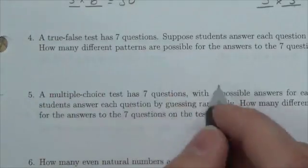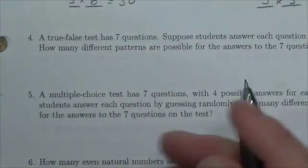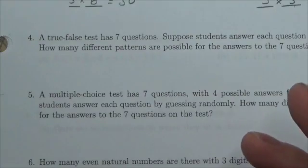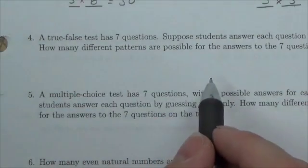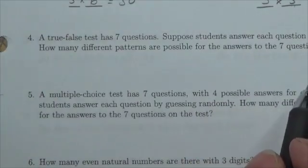So a true-false test has seven questions and suppose students answer each question randomly, just by guessing. How many different patterns are possible for the answers to the seven questions on the test?